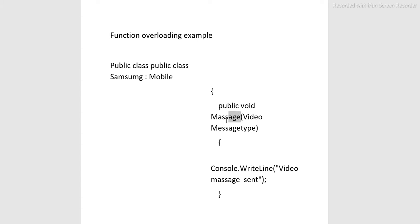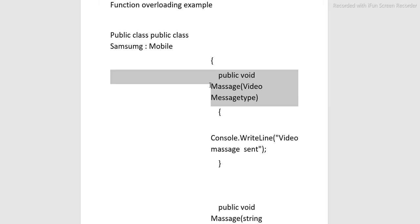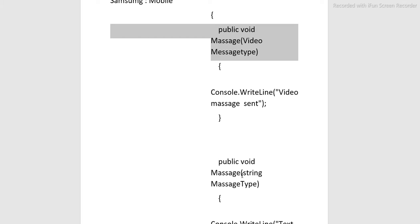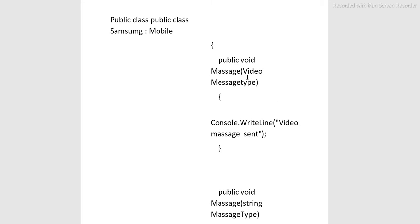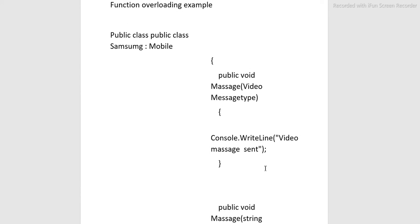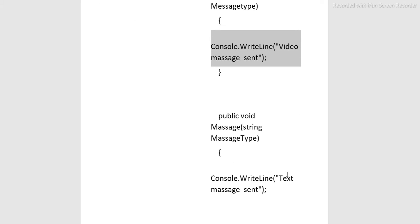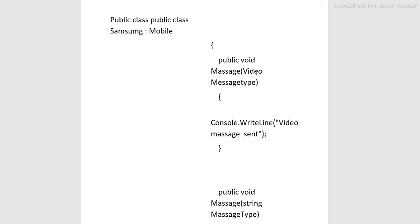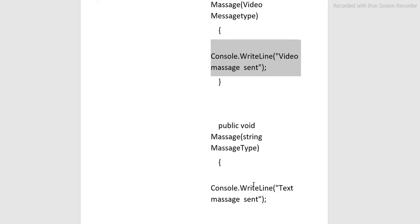These two methods have the same name — public void message and public void message — but the type of the message is different. One is video and the other is string. So we write 'video message send' and 'text message send'. Though the names of the methods are the same, the type of the message delivered is different: one is video and the other is text.